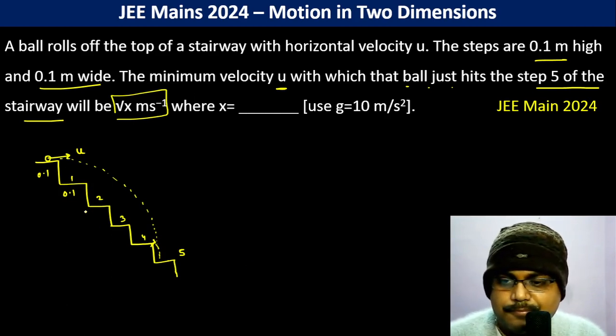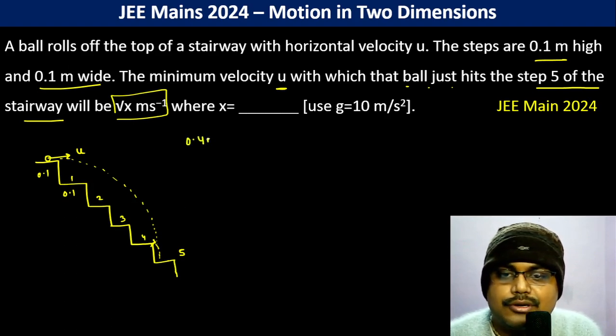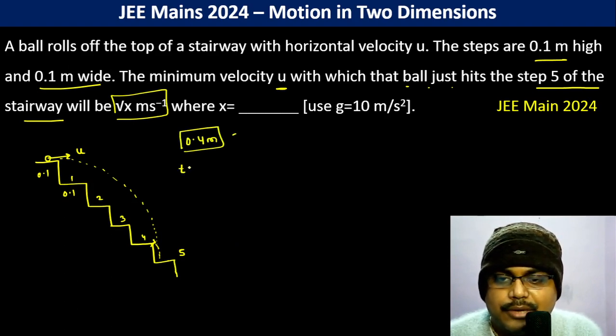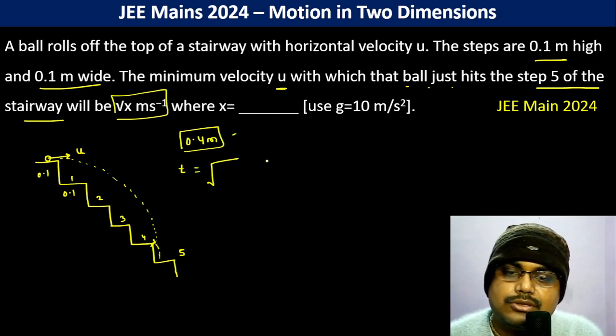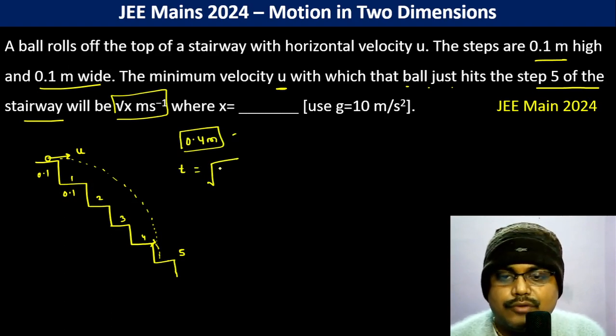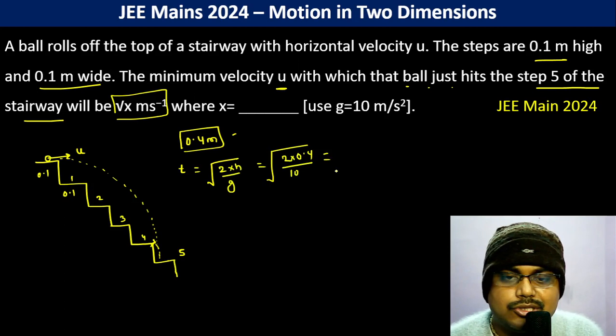Height it goes down is 0.4 meter. Time taken should be the square root of 2h by g, so this is root over 2 into 0.4 divided by 10, which is root over 0.08. That is the time taken.